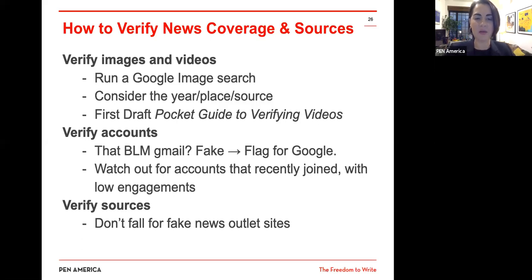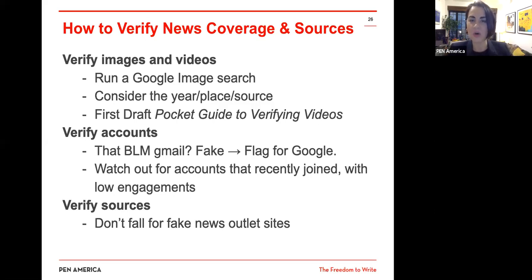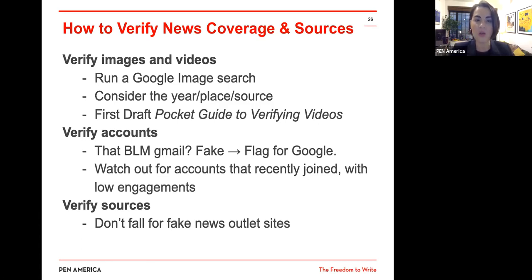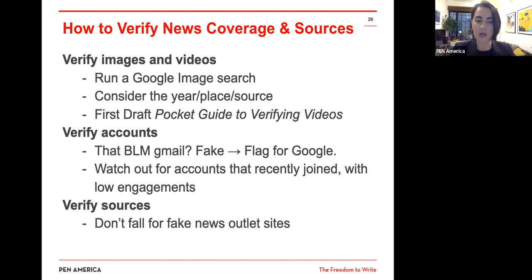I want to give you a package of the top-line ways to verify what you're seeing. For images and videos, run a Google reverse image search — you can even take a screenshot of the first clip of a video — which allows you to see the origins of a video or image. This is what I often call our extra credit. You also want to consider where and when something comes from: content might not be fake, but it's been misattributed to seem like it's happening now. First Draft has a fantastic pocket guide to verifying videos. Finally, think about accounts and sources: a fake Twitter account will often have recently joined with very low engagement but quite a lot of activity pushing out content. Don't fall for fake news outlet sites — check the 'About Us' page on any website before you share.